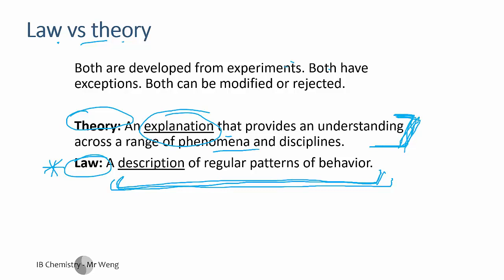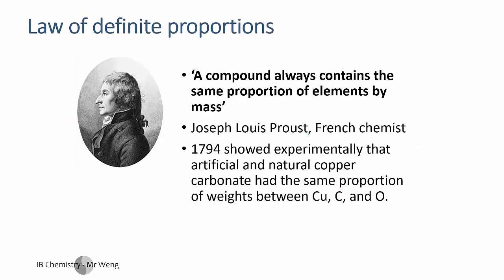A theory often needs modifying or is advanced over time. So what are the theories and laws for stoichiometry? We have the law of definite proportions: a compound always contains the same proportion of elements by mass. That was established through various experiments.